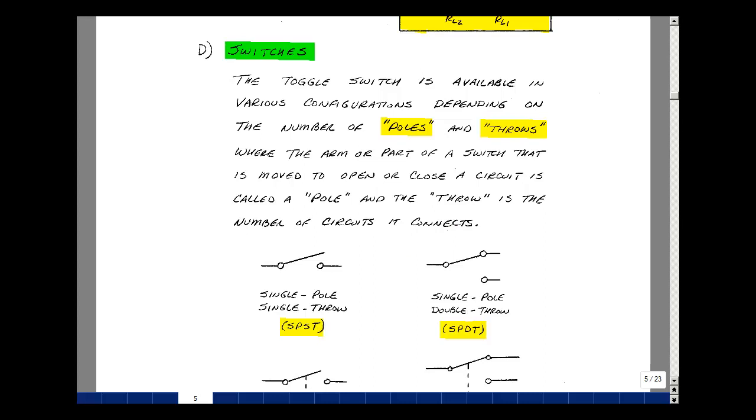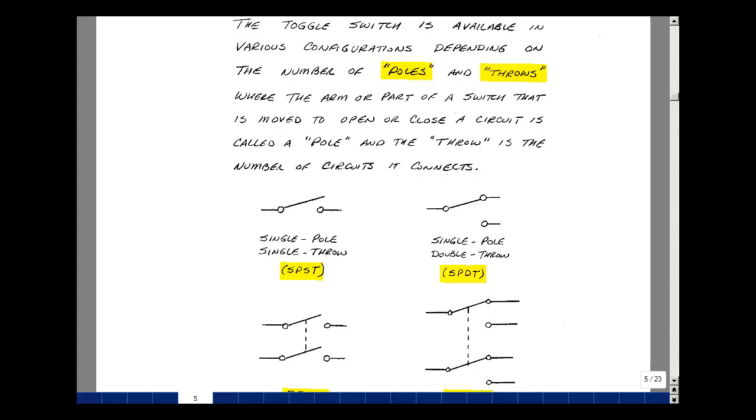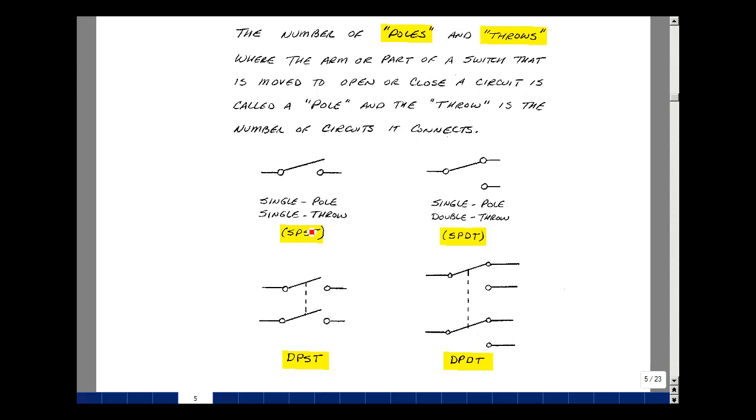So here's a single pole, single throw switch. Here's the pole, and here's part of a circuit, and part of a circuit, and when we close this, we then connect up one circuit. So single pole, single throw.